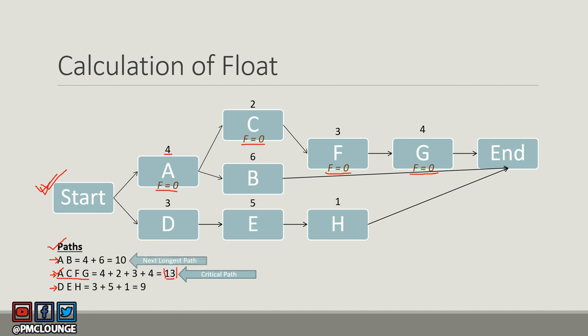The next longest path is AB with a sum of 10. You calculate float by subtracting the next longest path value from the critical path value: 13 minus 10 equals 3. This means the float for activities on path AB is 3.